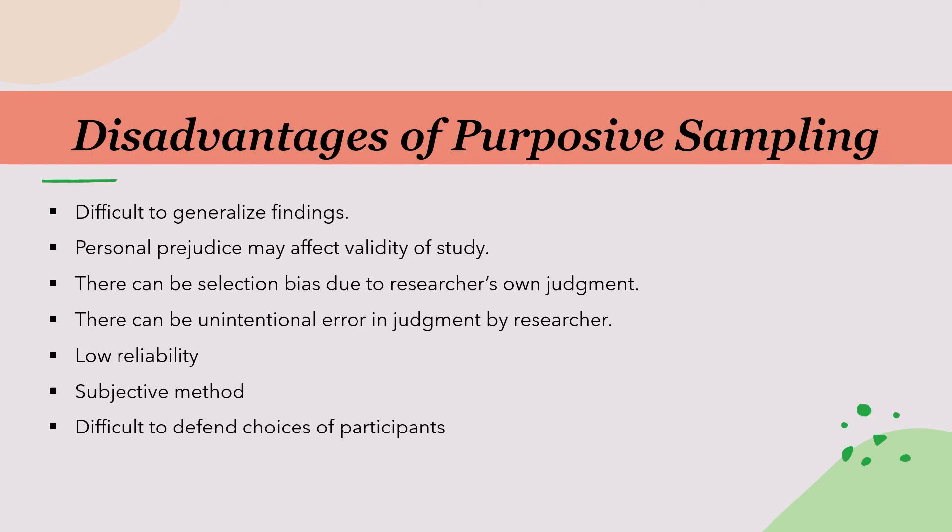There are many disadvantages of purposive sampling. It is difficult to generalize findings in case of purposive sampling as it is a non-probability sampling method. Personal prejudice of the researcher may affect validity of the study. Personal prejudice means researcher's own set of beliefs. There can be selection bias due to researcher's own judgment. Researchers can be biased towards a particular member. There can be unintentional error in judgment by the researcher, as humans have a tendency to make errors in our judgment. It is a less reliable and subjective method because it involves the judgment of the researcher. It is also difficult to defend choices of participants — researcher can never fully defend why he has chosen a particular participant.